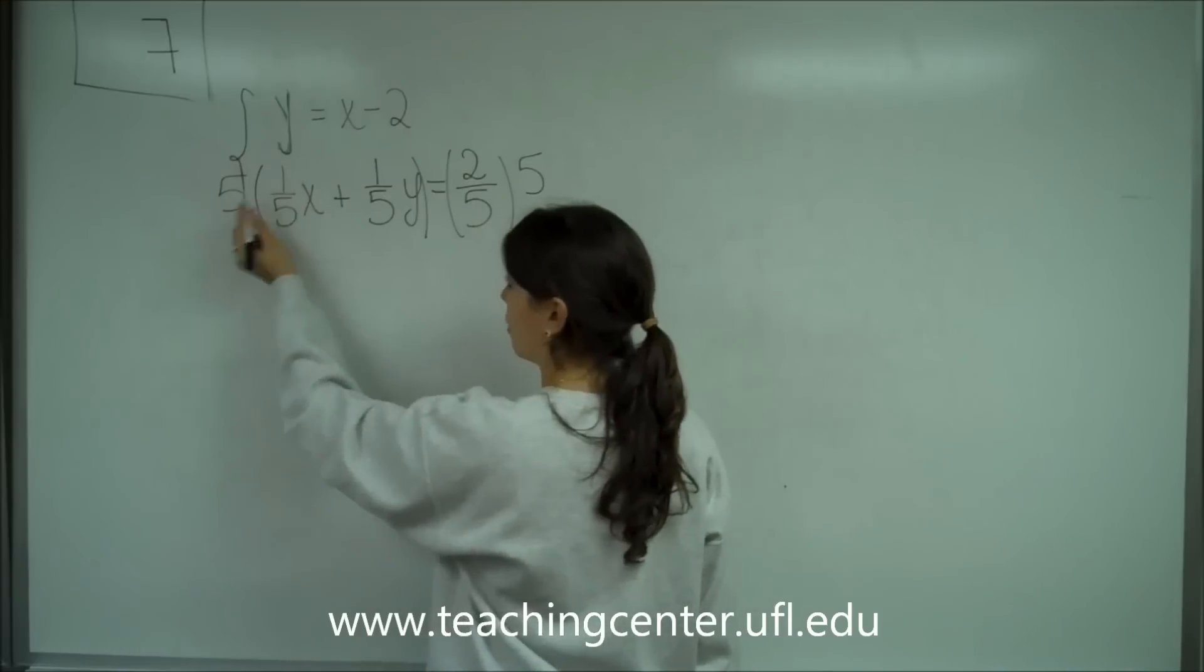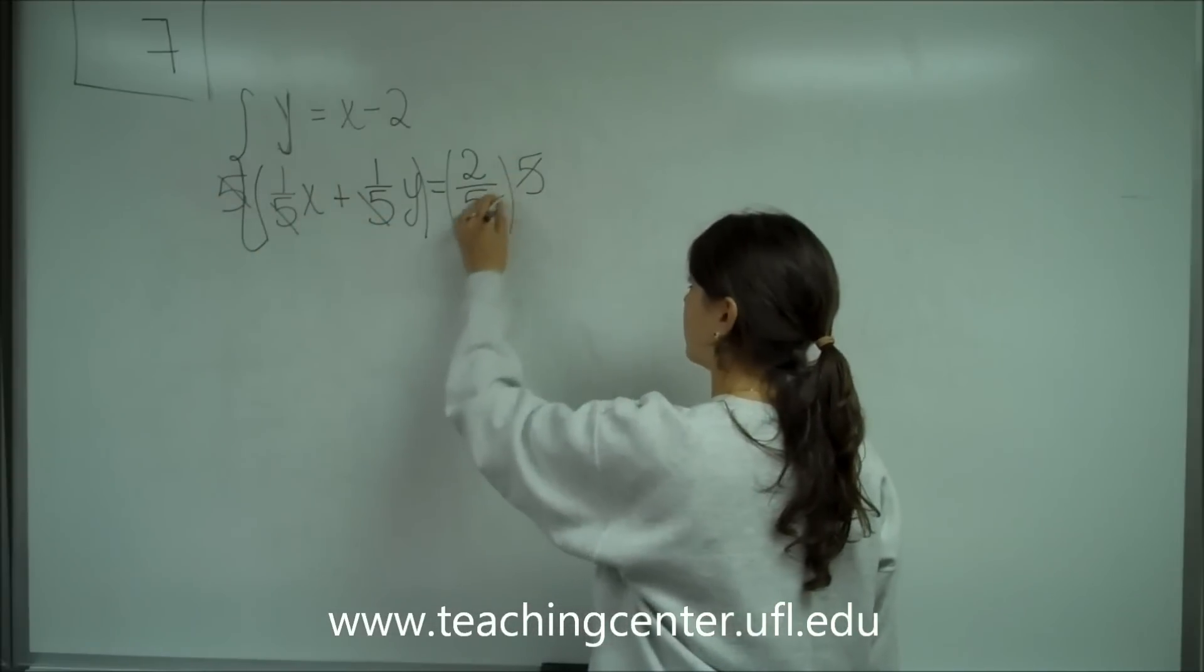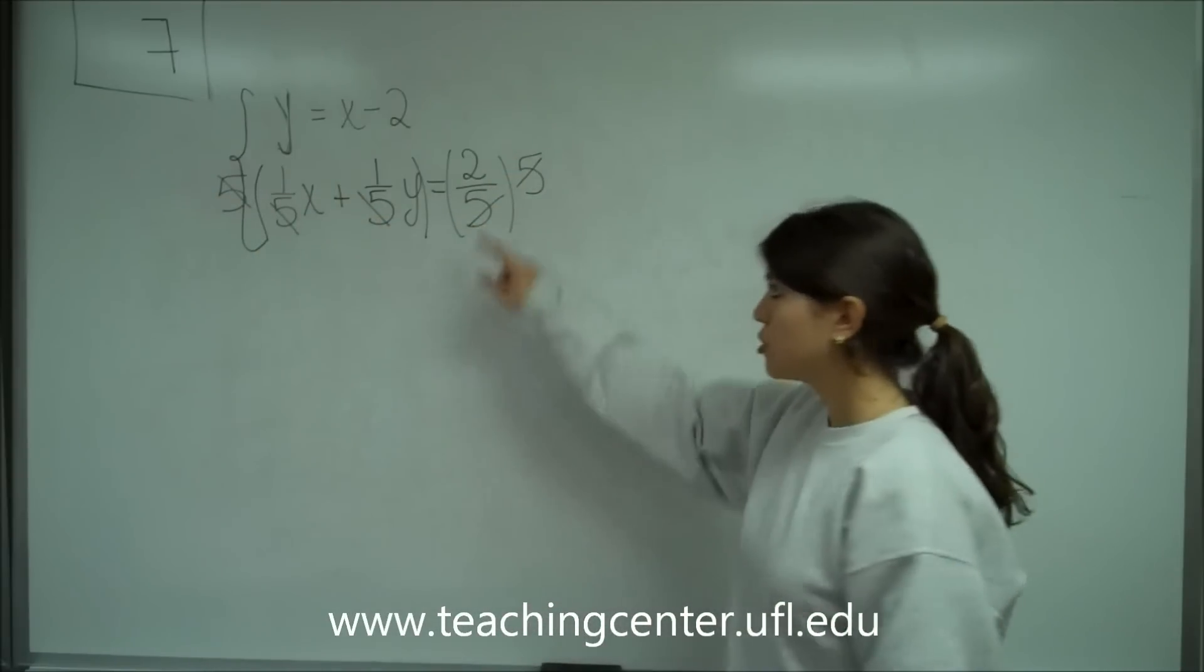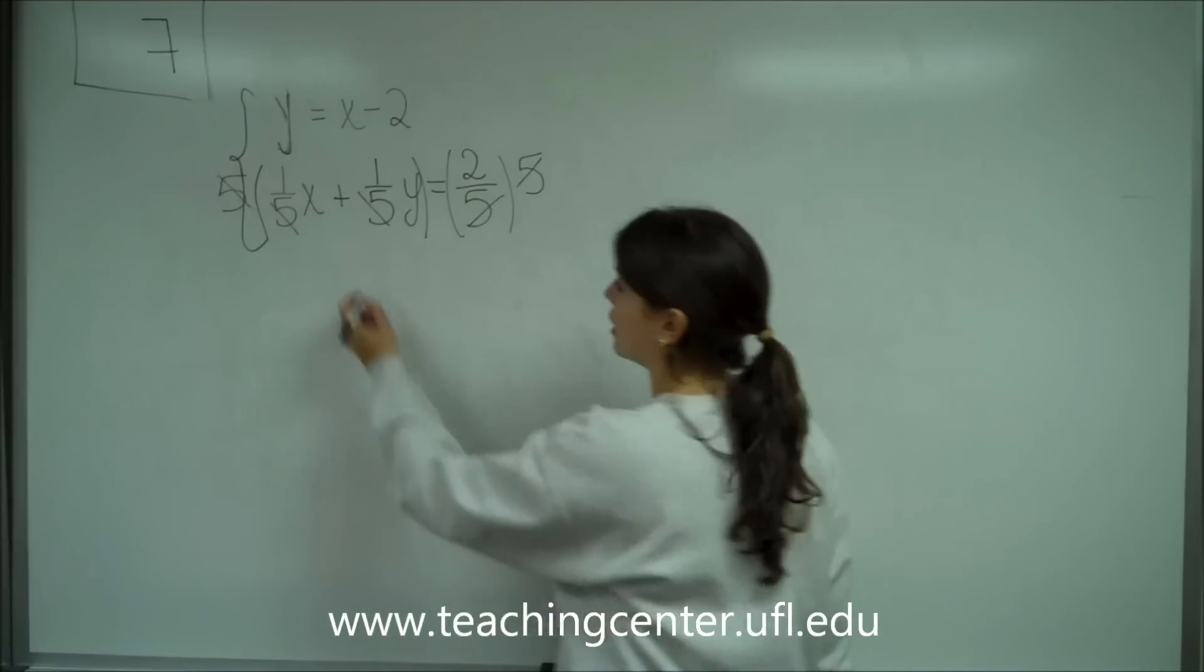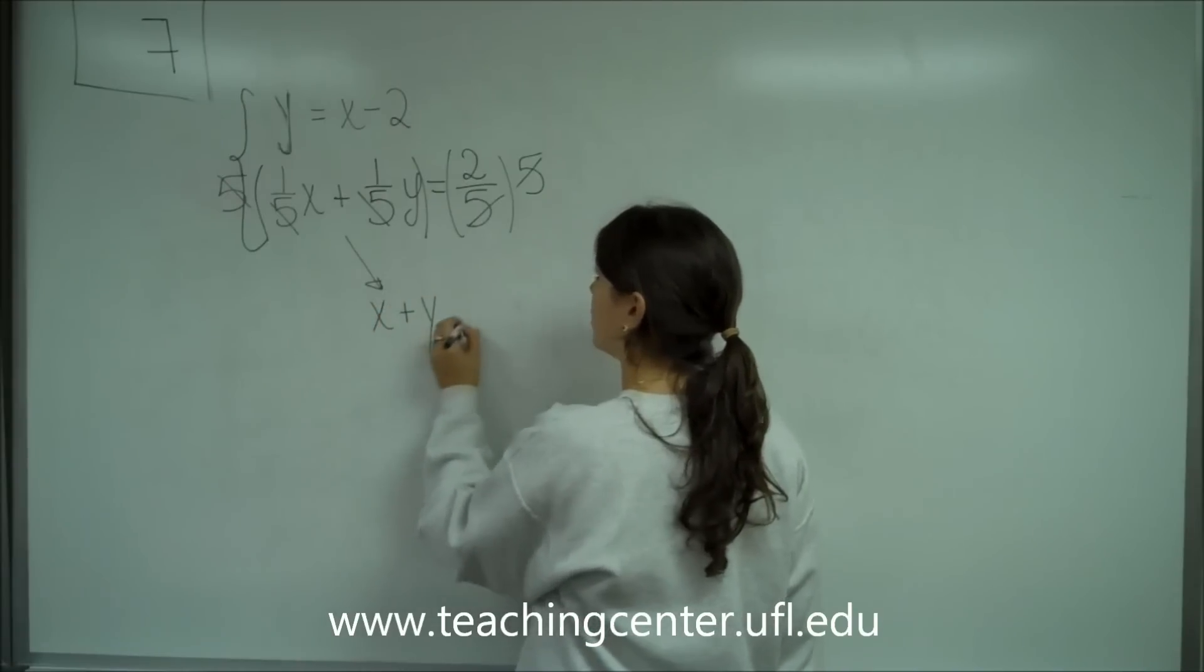So that when I factor this in, this 5 and that 5 cancel, this 5 and this 5 cancel. And then this side, I'm left with just the 2 as well. So then that turns out to be x plus y equals 2.